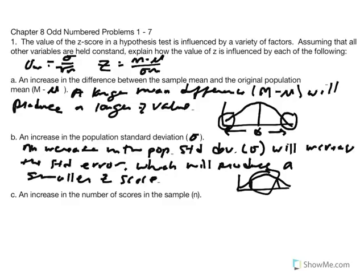Conceptually, when we have flatter, more diverse population distributions, when we take samples from those distributions, we produce distribution sample means that are also more diverse and more spread out, making it more difficult to find a z-score that's unique. We can think of standard deviation and standard error as illustrations of variability. As variability increases, the ability to show large mean difference is more difficult — differences are obscured by the original variability.